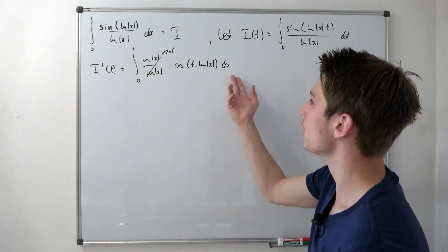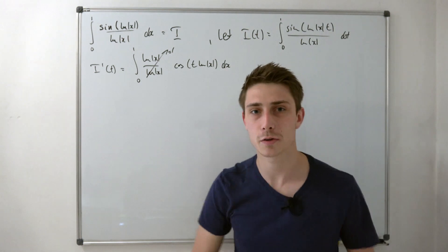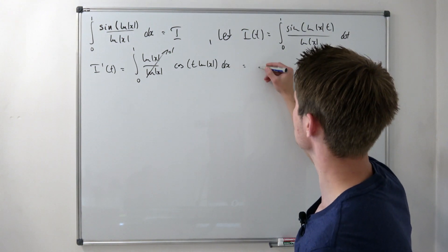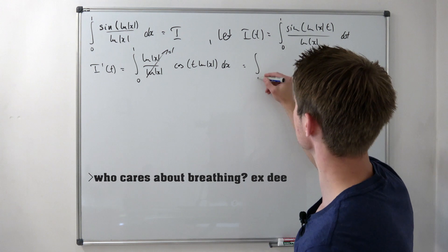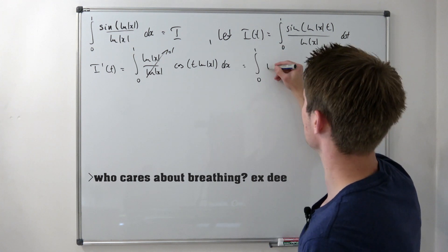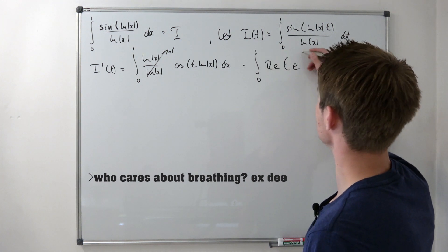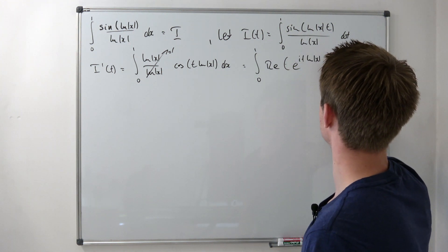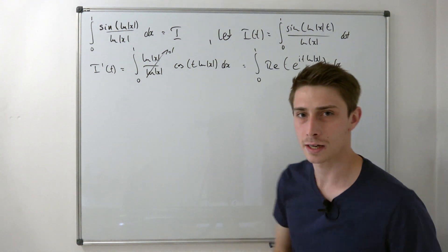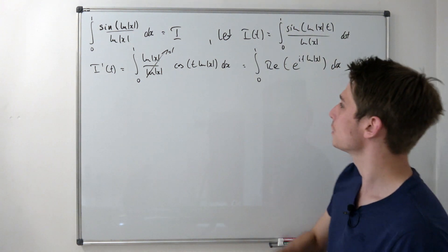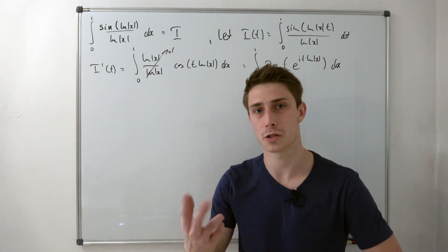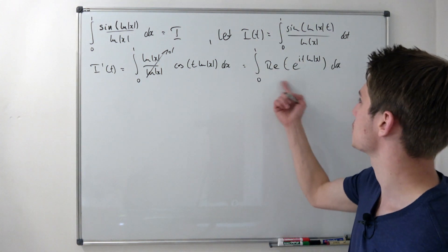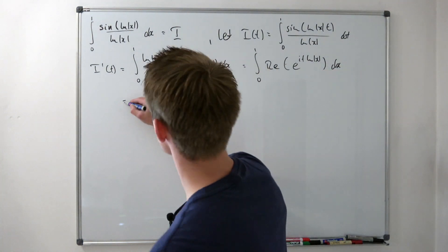Now we are left with this integral, and it's quite easy to integrate. This cosine is nothing but the integral from 0 to 1 of the real part of e to the (i · t · ln x) dx. Since these are just real operators, we can interchange the real part and the integral — it's a Banach lattice — so let's do this.